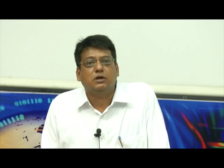The next step is to integrate alternative technologies into the building or site design. This includes renewable energy, water and waste management, building management systems, and low-cost or embodied energy materials. Lastly, you can validate your design — before it is built you can go for a peer review, and even after it is built you can get it reviewed in journals.